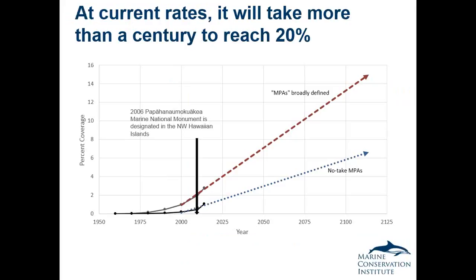Despite a recent uptick, we're still at something on the order of 3% of MPA coverage in areas that are broadly defined as marine protected areas. If we look at areas that are fairly strongly protected or almost no-take, we're down around 1%. If you extrapolate out those lines since about 2000, getting to the 10% goal of the Aichi targets under the Convention on Biological Diversity is projected fairly far out into the future. Getting to something like 20%, which is a more ecologically robust definition, is clearly something over 100 years at current rates.